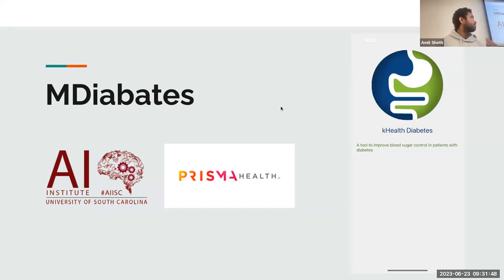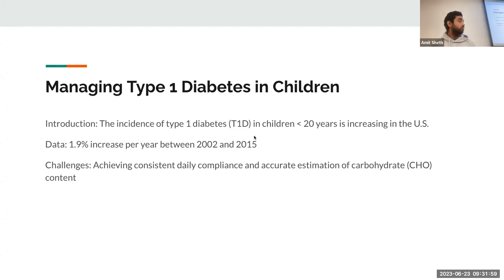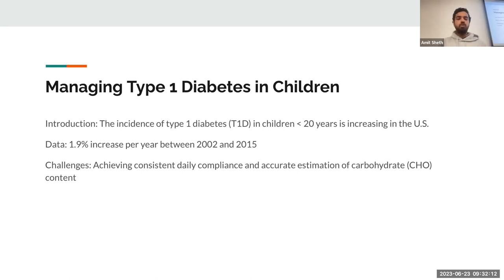The app name is M-Diabetes. It's a tool to improve blood sugar control in patients with type 1 diabetes. The challenge is to manage type 1 diabetes in children. The incidence of type 1 diabetes in children less than 20 years is increasing in the US, with data showing a 1.9% increase per year between 2002 and 2015. Our challenge is achieving consistent daily compliance and accurate estimation of carbohydrate content.